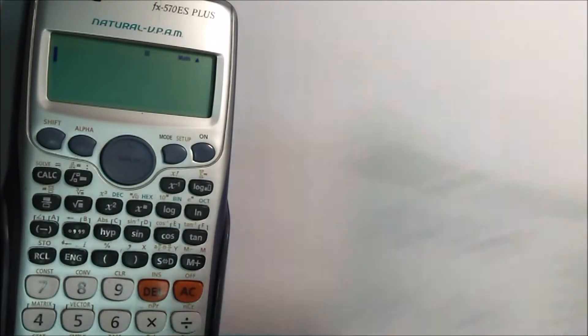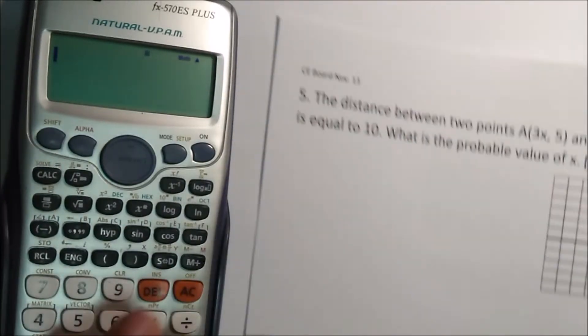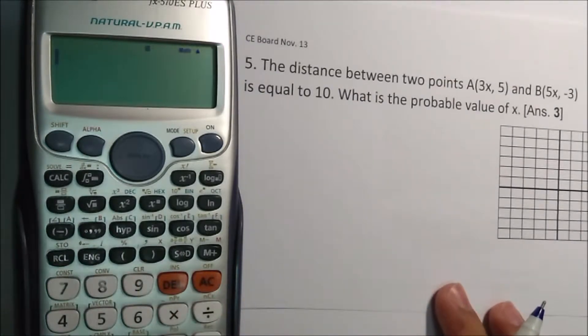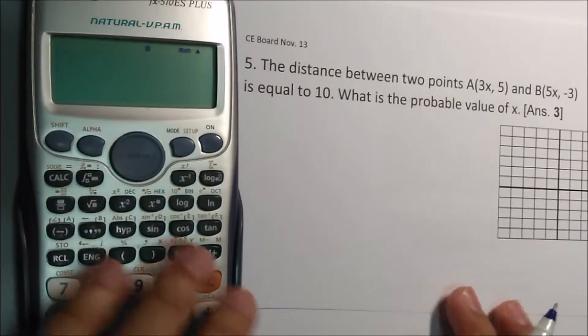Next, another example. This is CE board exam 2013. The distance between two points A is 3x and 5, and B, 5x minus 3, is equal to 10. What is the probable value of x?